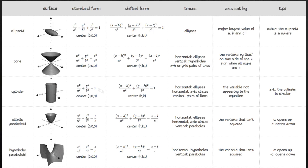Looking briefly at the other standard forms: the cylinder only has two variables, so that doesn't match. The elliptic paraboloid has all three variables, but z is not squared — I would need two variables squared and one not, which isn't the case. Same thing with the hyperbolic paraboloid — two variables are squared and the other isn't. None of these others fit, which really narrows it down to the equation of the cone.